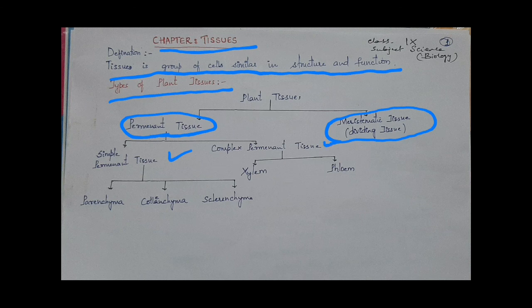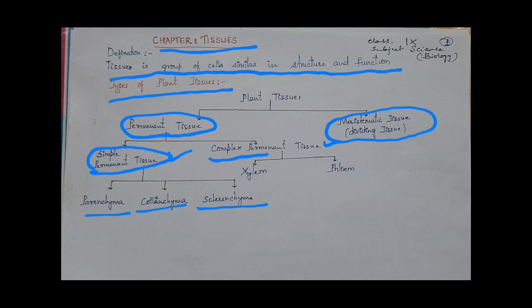Simple permanent tissue is one which has only one type of cell, that's why it is called simple permanent tissue. Simple permanent tissue is again divided into three types: parenchyma, collenchyma, and sclerenchyma.